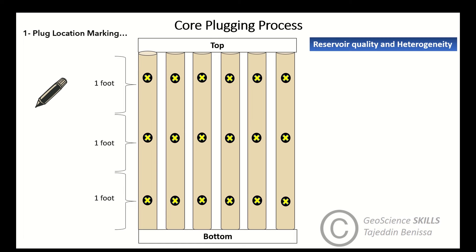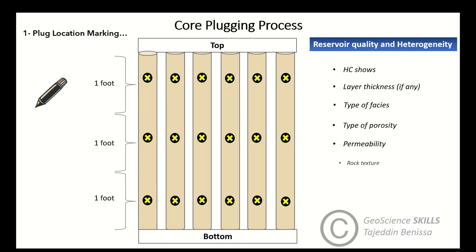Plug selection depends on reservoir quality and heterogeneity. The characteristics that should be considered during selection process include hydrocarbon shows, layer thickness in case of multiple layer reservoirs, type of facies, type of porosity, permeability, rock texture, fluid contacts, depth, diagenesis, and sequence boundaries. In addition, plug selection also depends on the objective from the analysis, such as reservoir quality evaluation, formation damage study, or shale interval compaction.